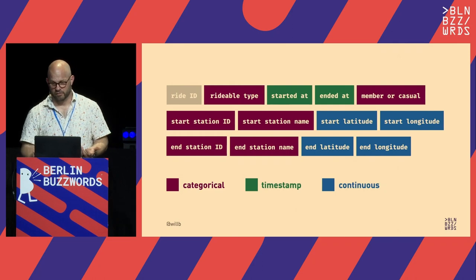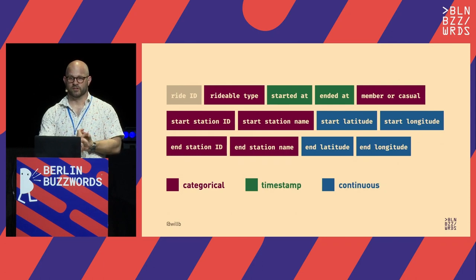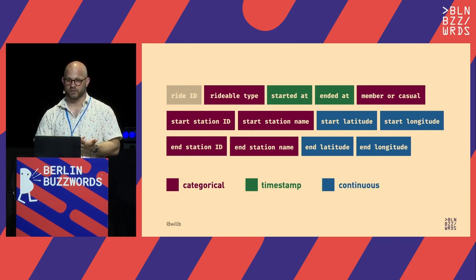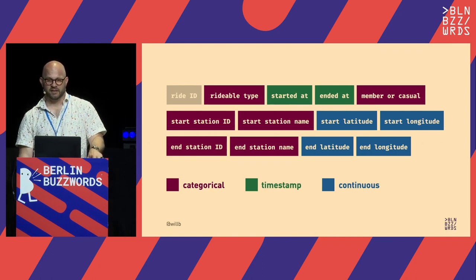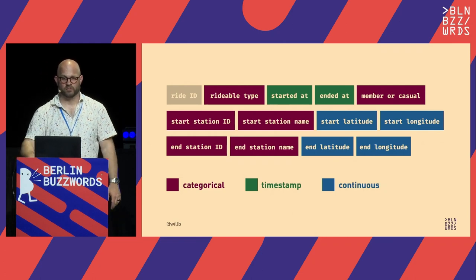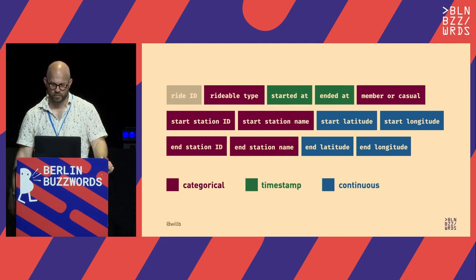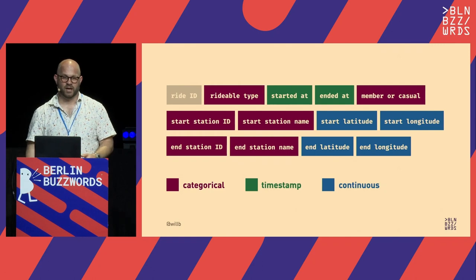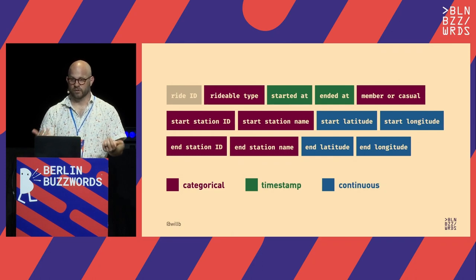This is what the dataset looks like. We have a ride ID, a rideable type — whether someone is taking a conventional bicycle, an electric bicycle, or whether a bike is being removed from service. We have start and end times, whether this person was doing a one-off short-term rental or had a recurring membership, and details about where the ride started and ended — station ID, station name, and latitude and longitude for both start and end points.